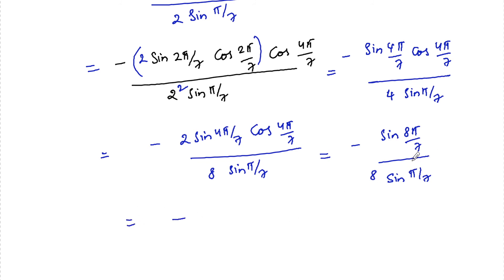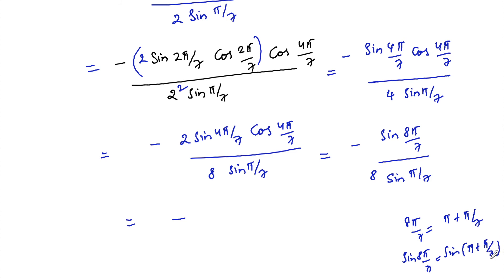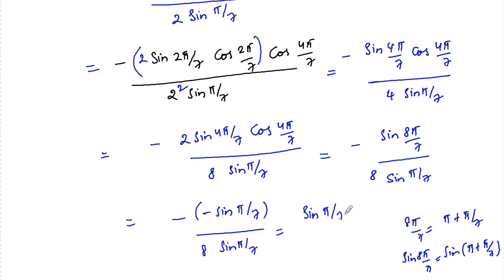Now, 8π/7 equals π + π/7, so sin(8π/7) = sin(π + π/7). Since sin(π + θ) is negative, sin(π + π/7) = −sin(π/7). Substituting, we get minus of [−sin(π/7)] divided by 8 sin(π/7). The sin(π/7) terms cancel, giving the final answer 1/8.